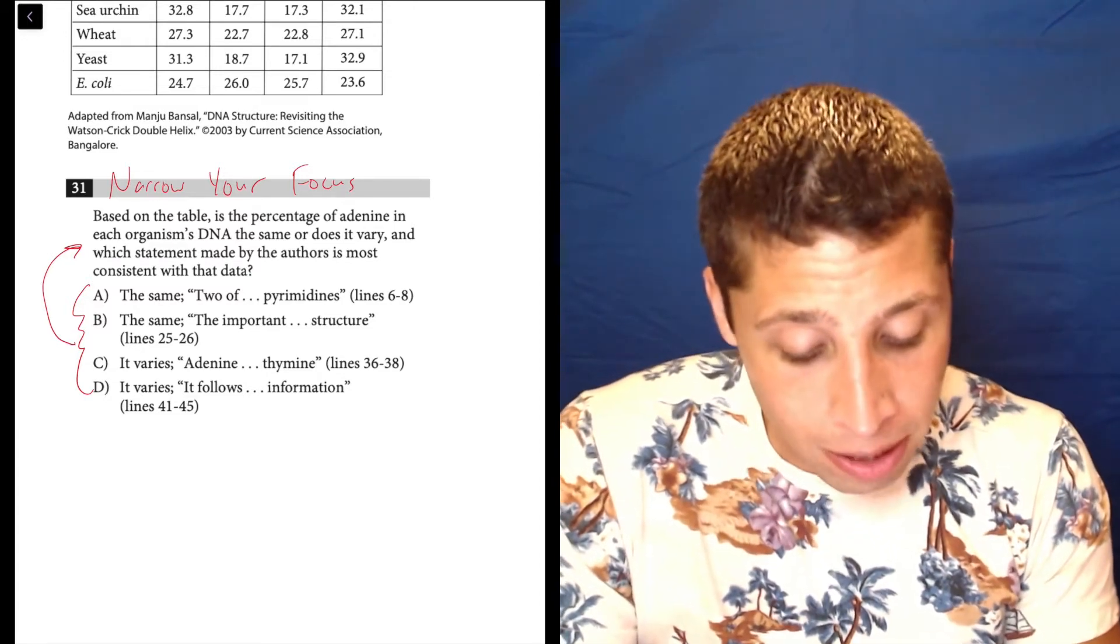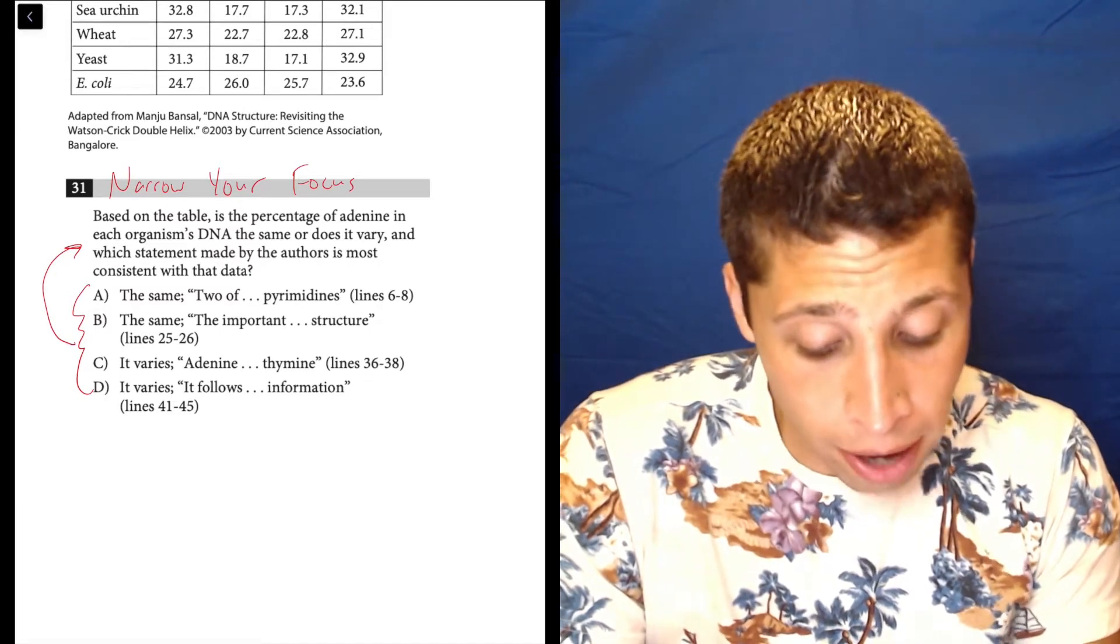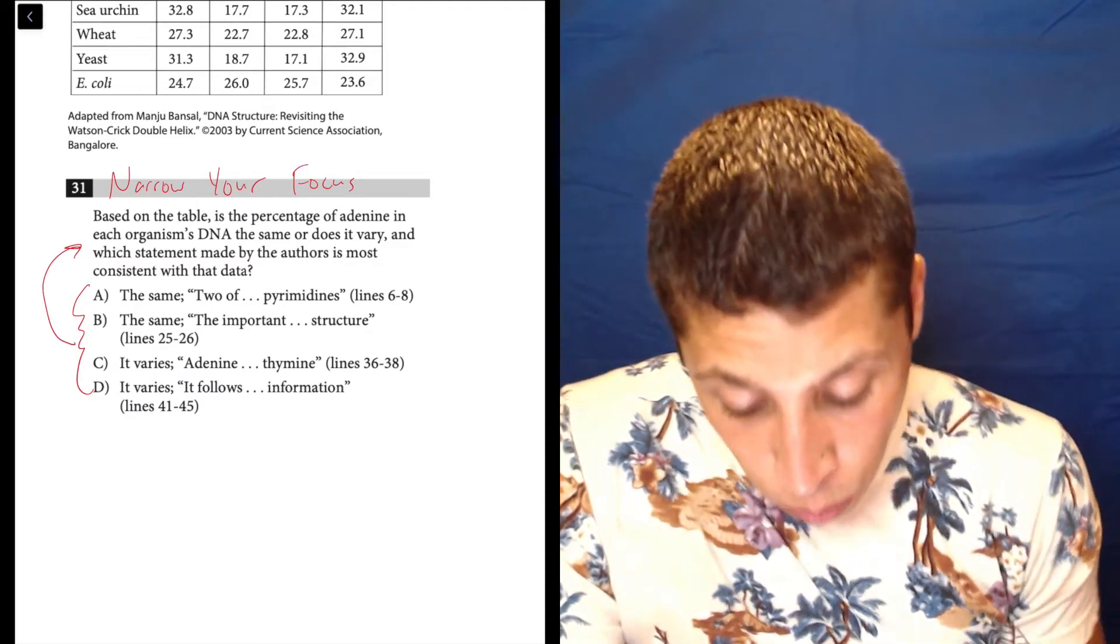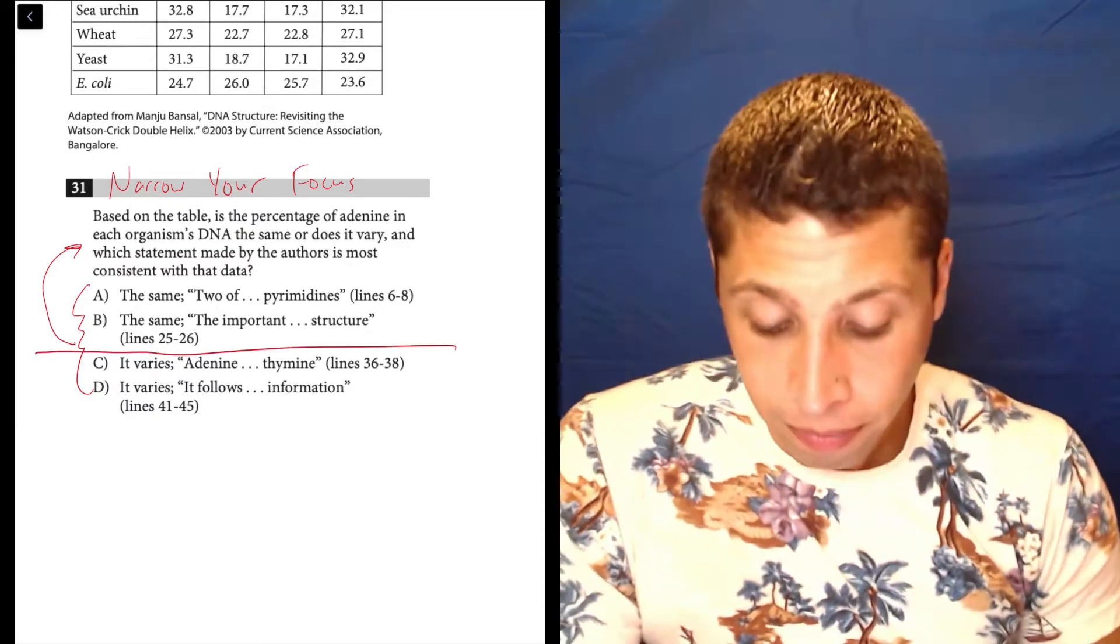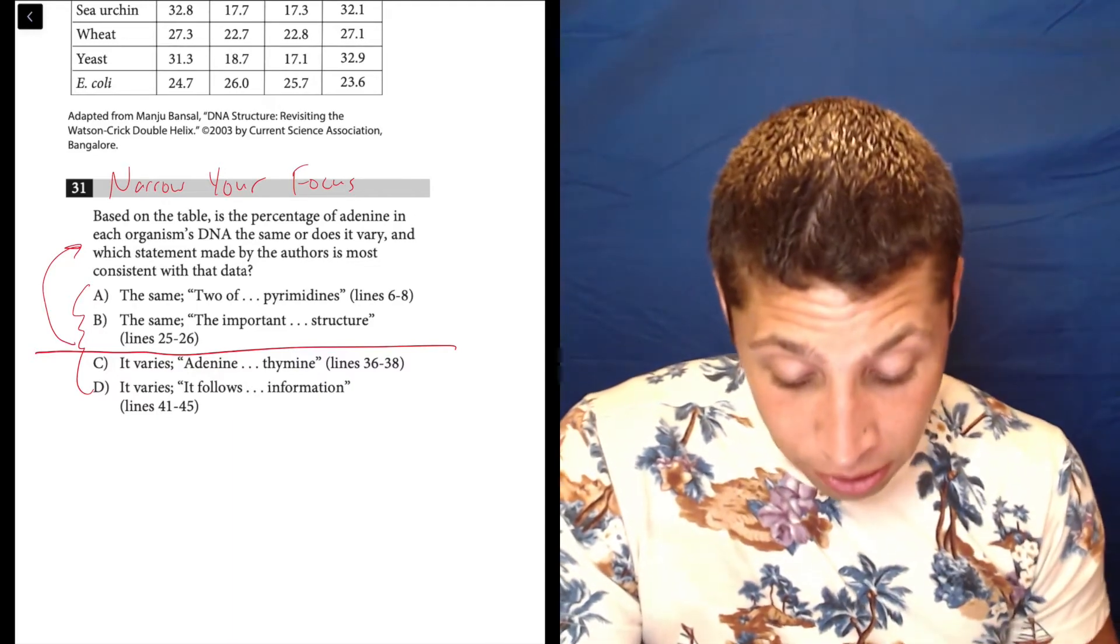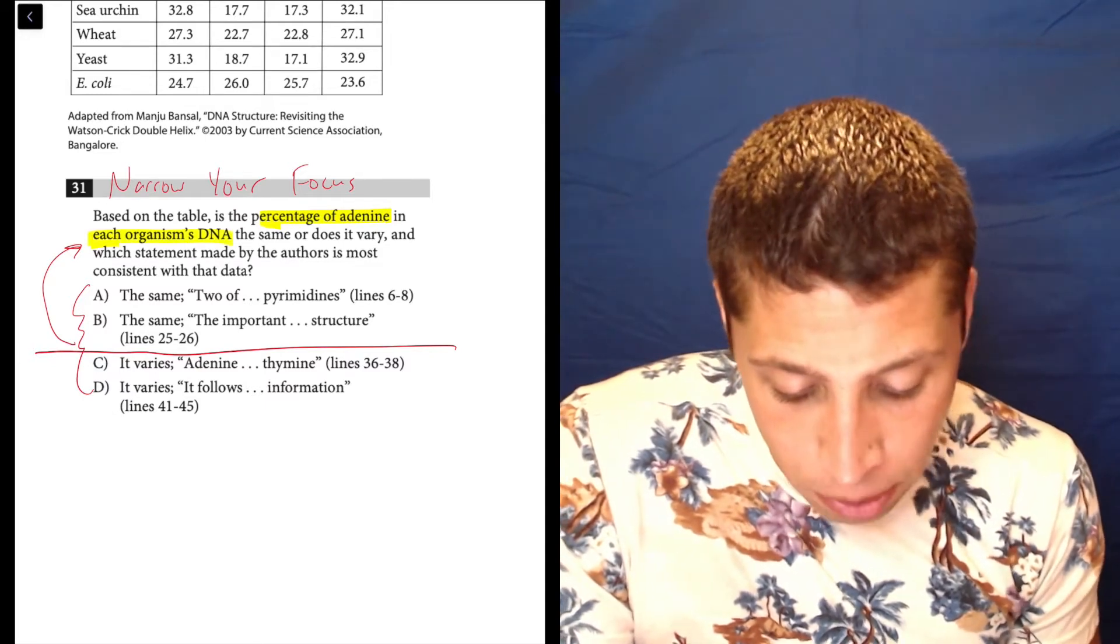Based on the table, is the percentage of adenine in each organism's DNA the same or does it vary? And which statement made by the authors is most consistent with the data? Well, look, we've got a clear break. A and B say it's the same. C and D says it varies. So just look. Does the percentage of adenine in each organism's DNA, is it the same or does it vary?